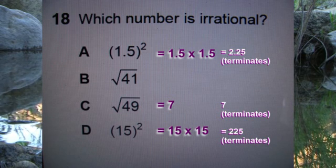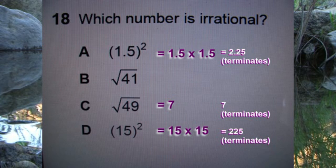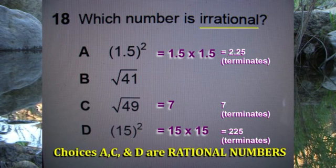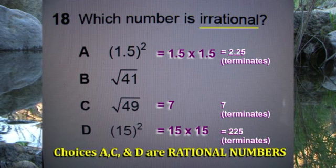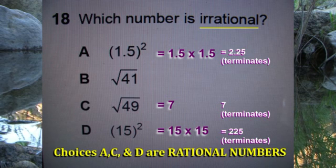So choices A, C, and D are all rational numbers because they all terminated. Our answer then is B — the only choice left. It's irrational.